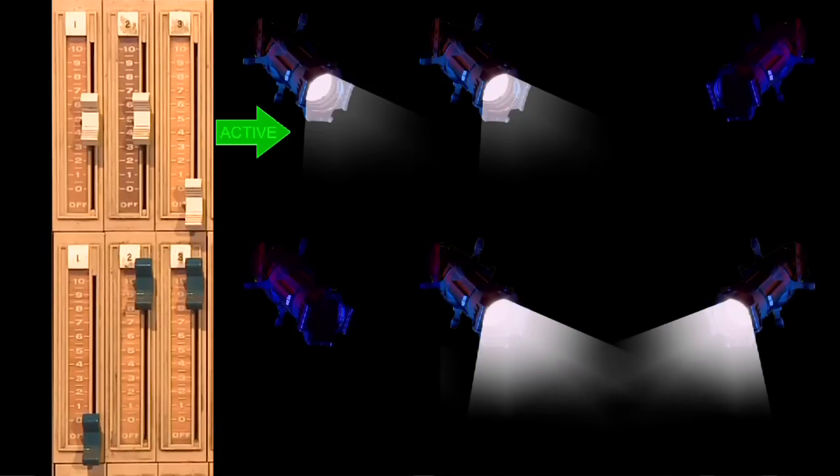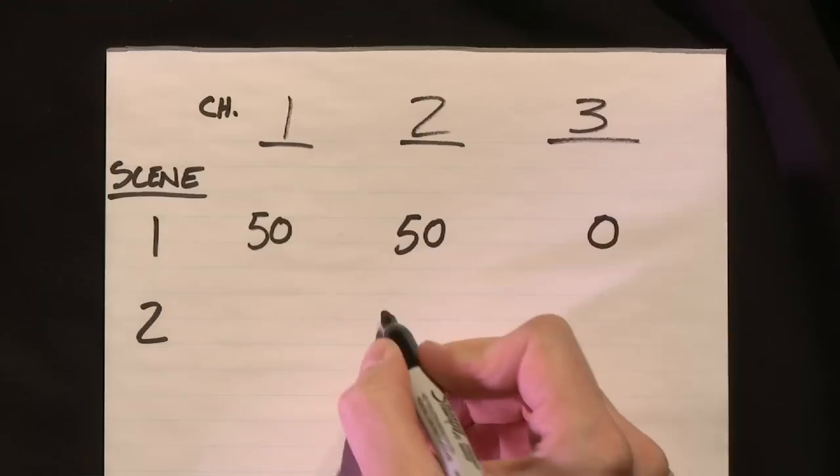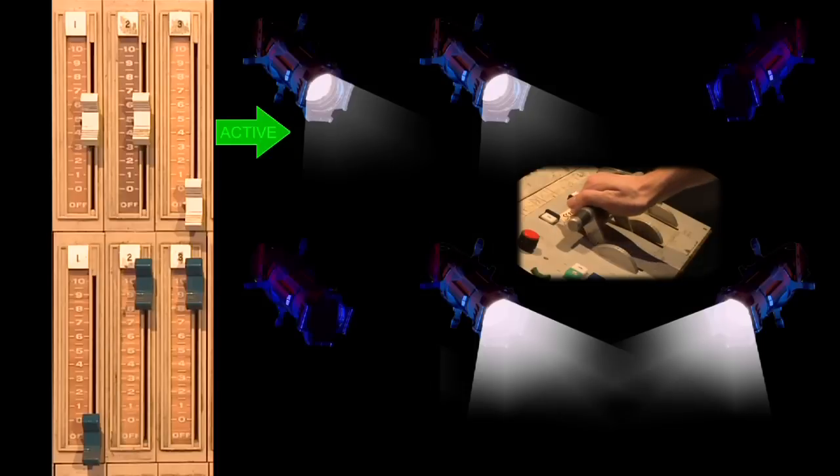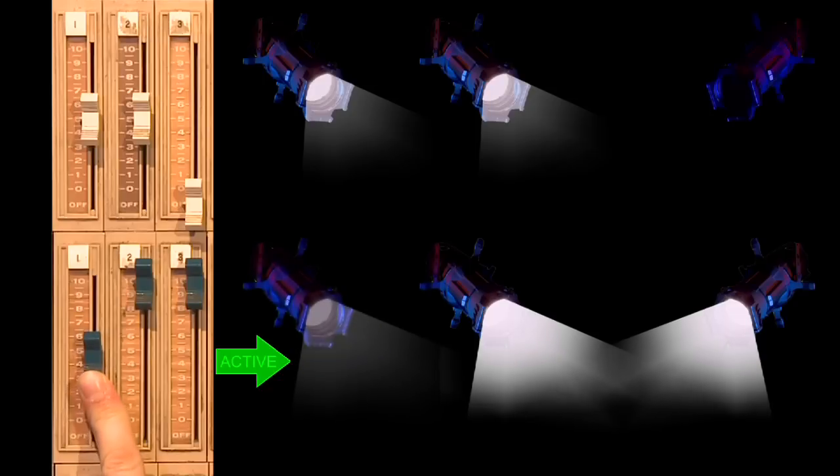That's my first scene. For the second scene, I want dimmers 2 and 3 to go to full and dimmer 1 to remain at 50%. If I don't write down that fader 1 is at 50% in scene 2, then when I fade from scene 1 to scene 2, dimmer 1 goes to 0% and stays off.